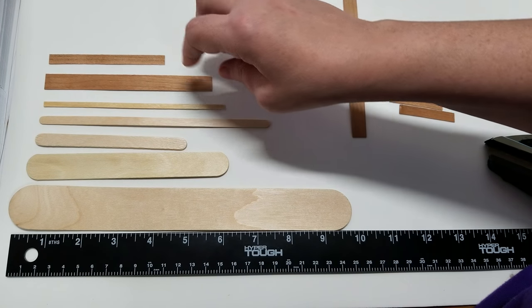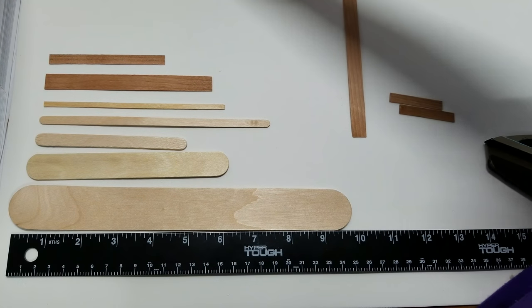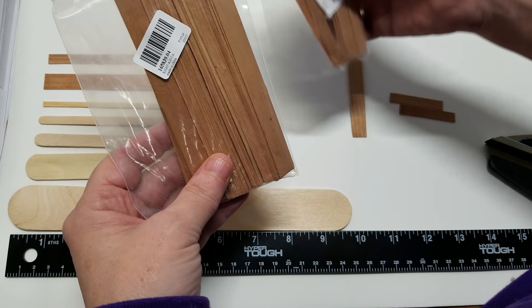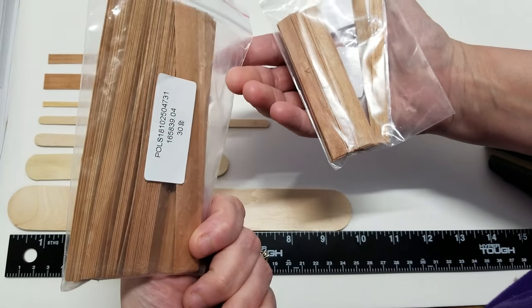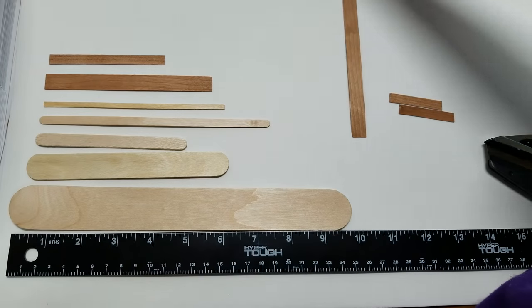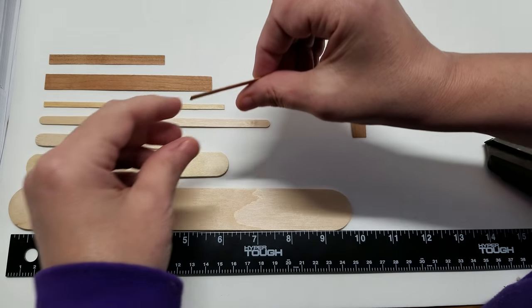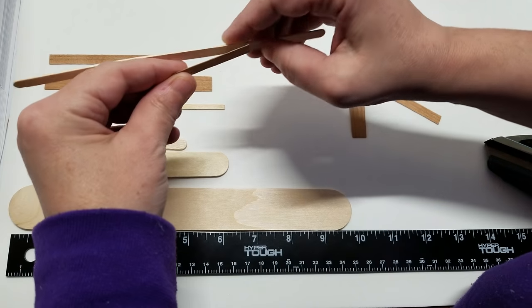They are basically wooden candle wicks and they come in packs. I ordered them on eBay. I'll leave the link below and you can cut them really easy. They're super super thin. I don't know if you can see the comparison there.